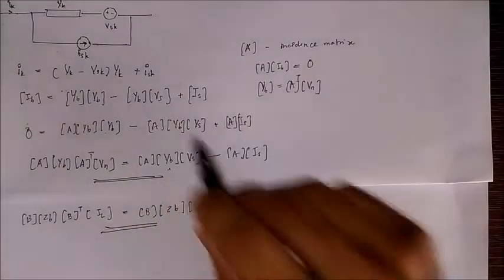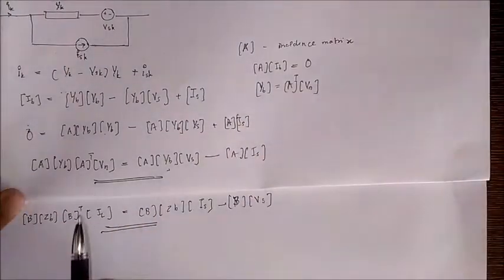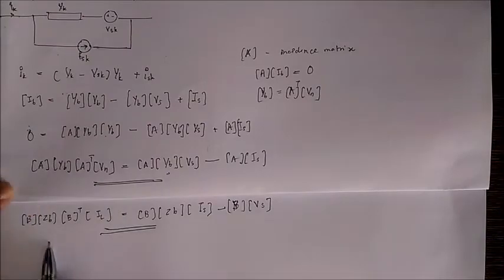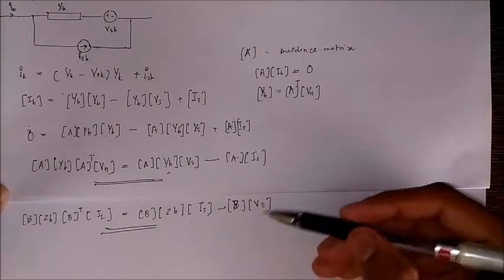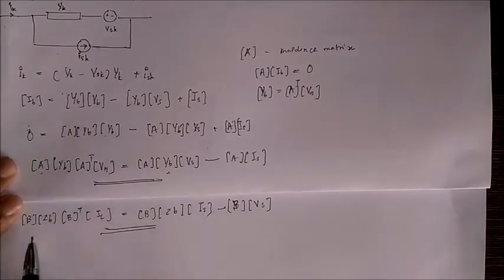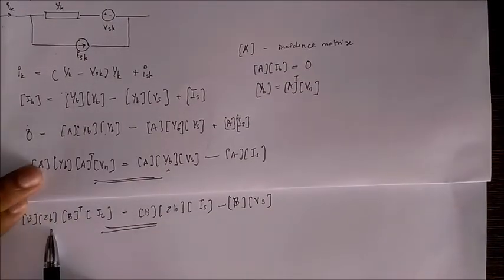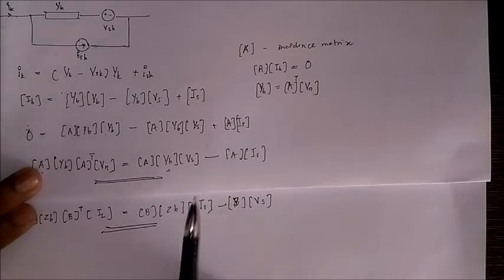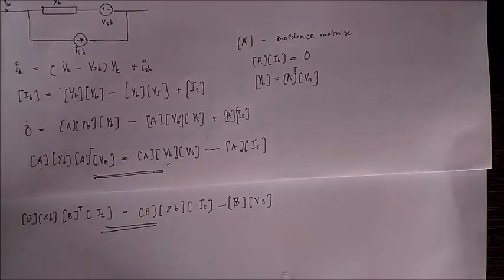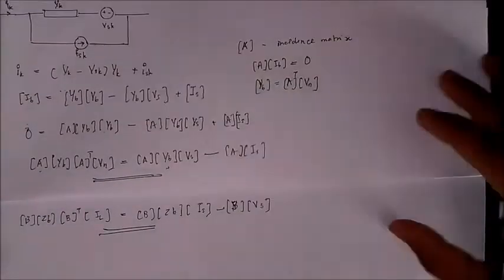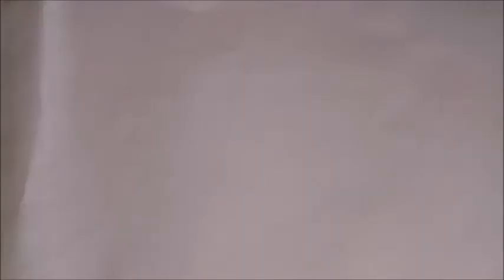Now comparing with the other equation that we solved we can see that there are only some minor differences so you can memorize these two equations easily. A is replaced by B and YB is replaced by ZB and also Vs and Is are interchanged. So for solving problems you only need to memorize these equations. Now let's solve a problem with this equation.